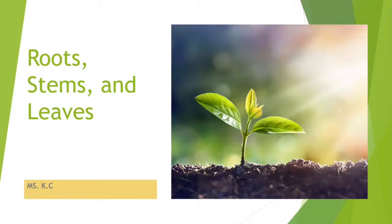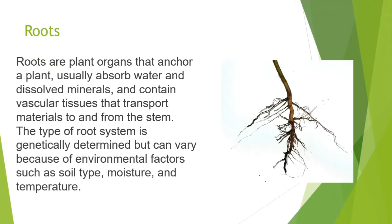Roots are plant organs that anchor a plant, usually absorb water and dissolved minerals, and contain vascular tissues that transport materials to and from the stem. The type of root system is genetically determined but can vary because of environmental factors such as soil type, moisture, and temperature.